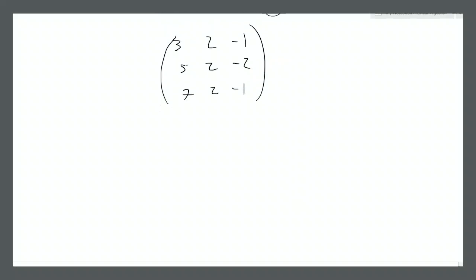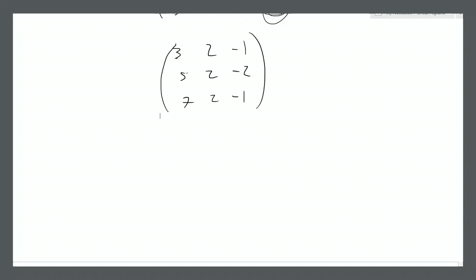It's not necessary that the trivial solution where everything equals 0 is the only solution — there can be non-trivial solutions as well. This leads us to something called the rank of a matrix. The rank of a matrix is the number of leading ones when the matrix is in row echelon form.